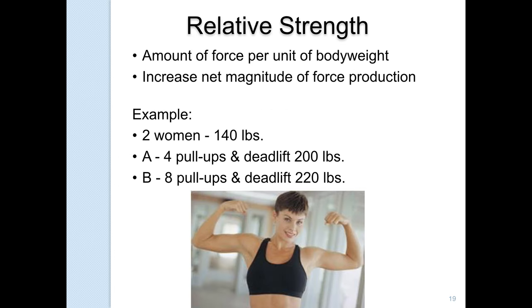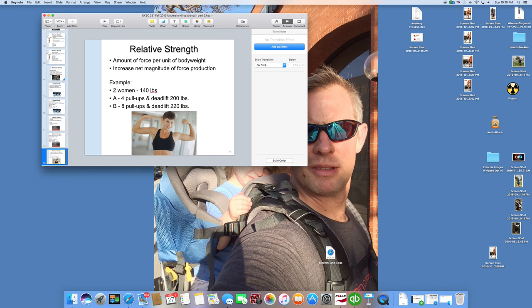Relative strength is the amount of force per unit of body weight. For example, two women who both weigh 140 pounds — one can do four pull-ups and deadlift 200 pounds, another can do eight pull-ups and deadlift 220 pounds. The second one has a higher relative strength because she can generate more force with the same body mass. That's a brief overview of the different types of strength. We have one more lecture to go, and we'll tie it all together. Thank you very much.